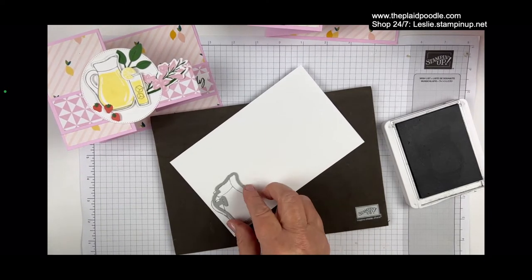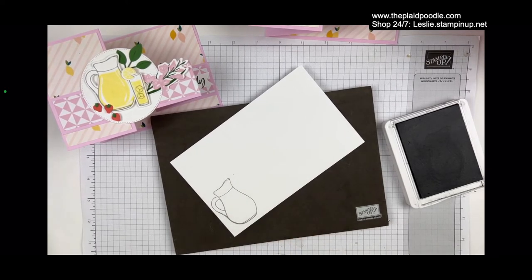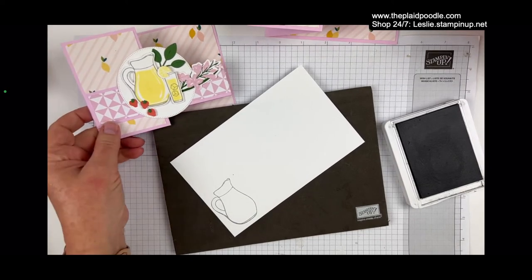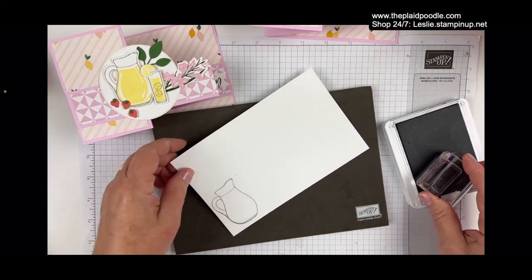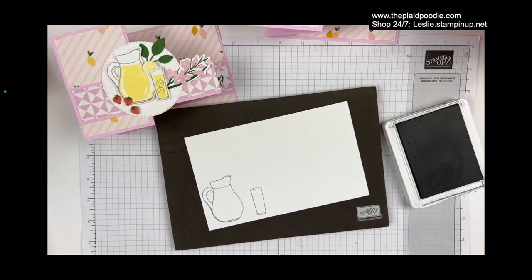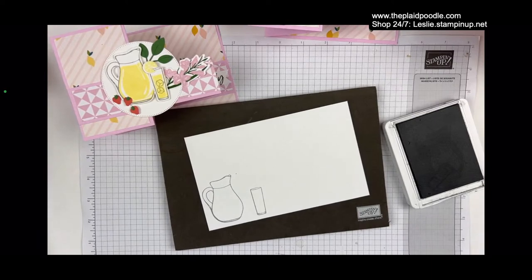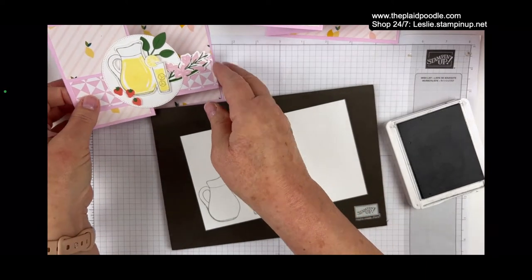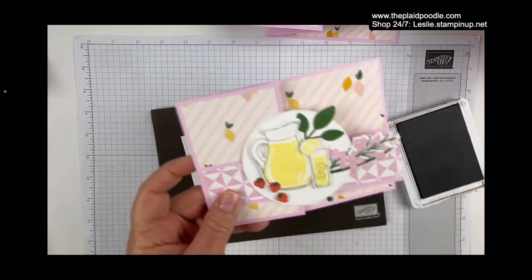I'm using Smoky Slate. I think it's our lightest gray at Stampin' Up. When I use photopolymer stamps, I kind of like to have a little cushion underneath. I'm using Smoky Slate. Hopefully the die is going to fit that. I use the Smoky Slate because I thought it would make it look kind of like glass. And then I need a glass.